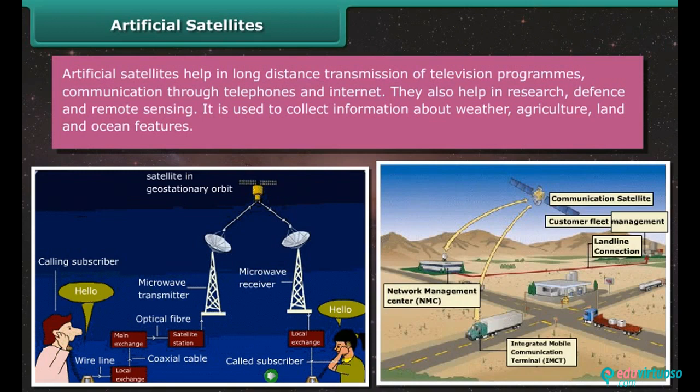Artificial satellites help in long distance transmission of television programs, communication through telephones and internet. They also help in research, defense, and remote sensing. It is used to collect information about weather, agriculture, land and ocean features.